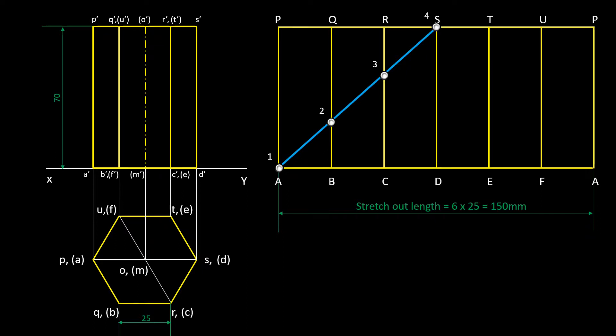To show the shortest path of the ant on the solid or on the front view, project all the points to the front view. Project point 1 to the front view of edge AP.